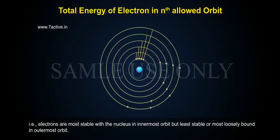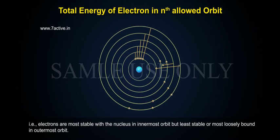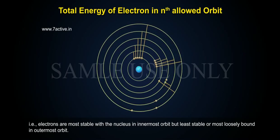That is, electrons are most stable with the nucleus in innermost orbit, but least stable or most loosely bound in outermost orbit.